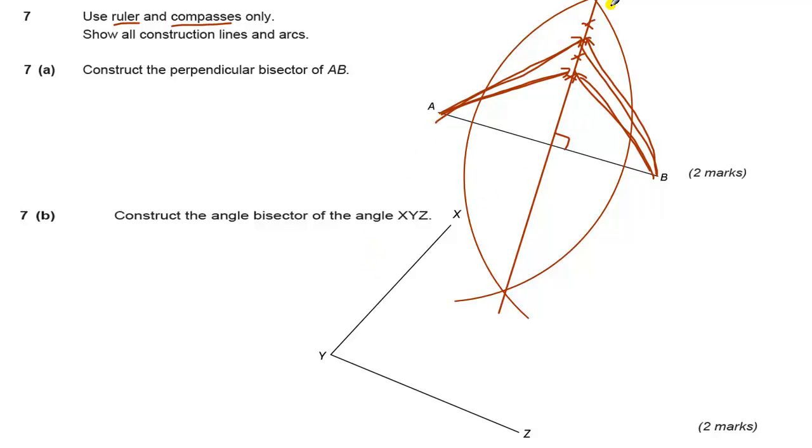So that's what your perpendicular bisector is. But all you need to do is the arcs and the line going through the two points where they cross. OK, now to construct an angle bisector, I think I'm just going to move this angle over here a bit so it's not getting in the way.